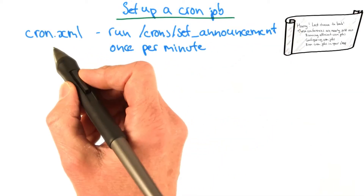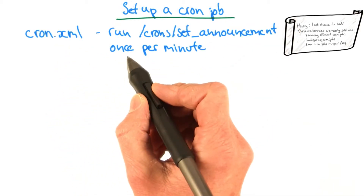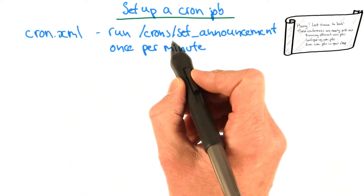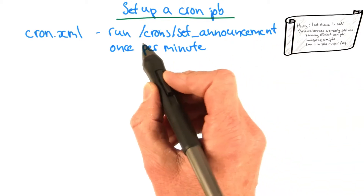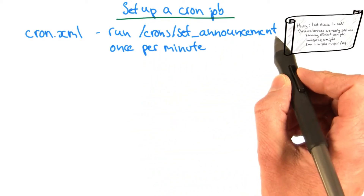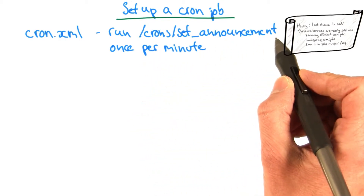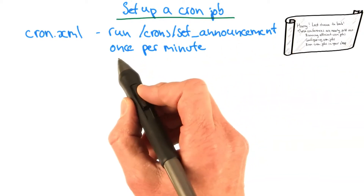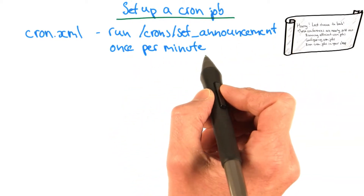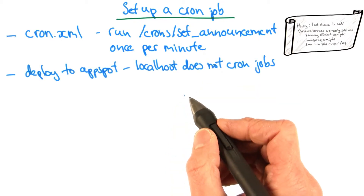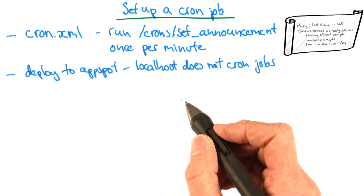To set up your cron job, you're going to need to create a cron.xml file, and configure it to run slash cron slash set announcement, because that's the path that we set up for our set announcement function. Then specify the schedule, let's say once per minute. The development server on localhost doesn't run cron jobs.